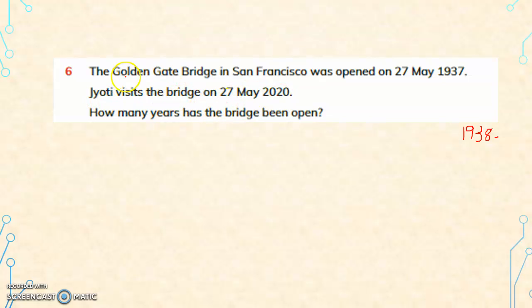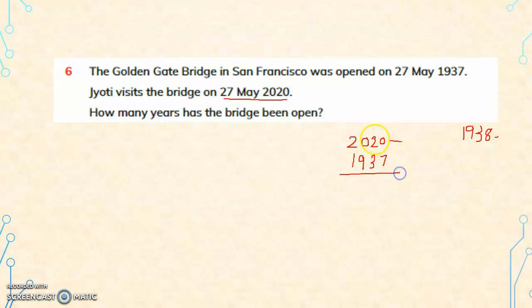When does Jyoti visit the Golden Gate Bridge? She visits on 27th May 2020. How many years has the bridge been open? 2020 minus 1937: 0 minus 7, we borrow to get 10 minus 7 = 3. Borrowing again: 11 minus 3 = 8, 9 minus 9 = 0, 1 minus 1 = 0. So the bridge has been open for 83 years.